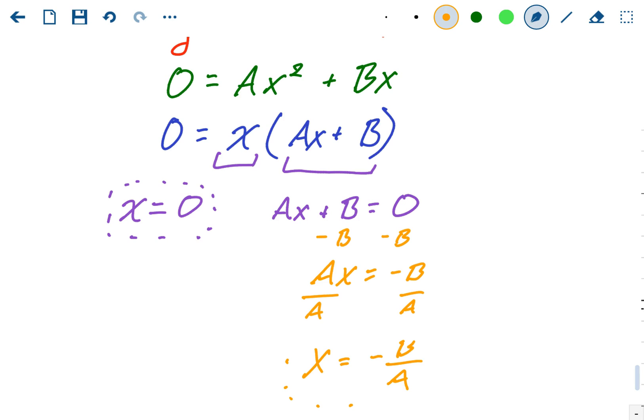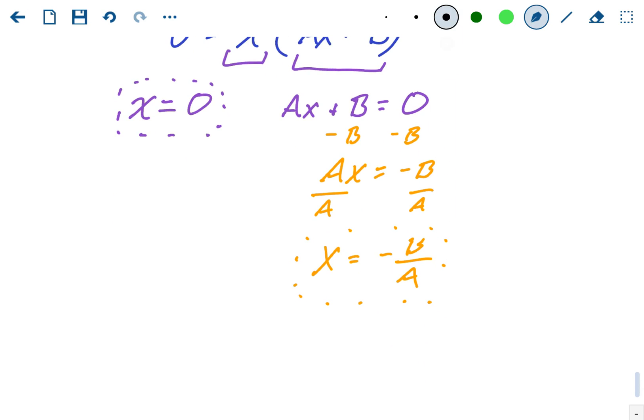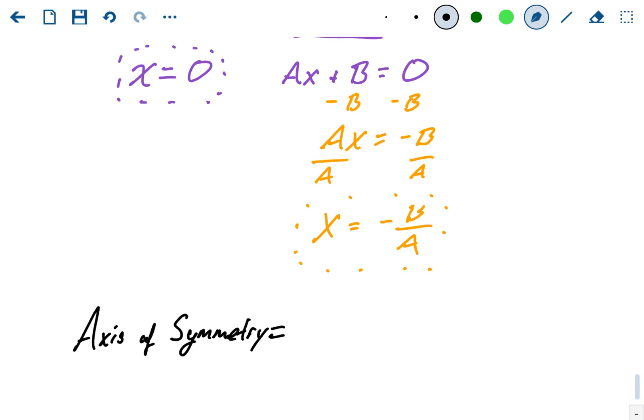Our axis of symmetry has to be halfway between these two points. How do we find halfway between two points? Well, you add them together and you divide by two. So our axis of symmetry is going to be between our two x-intercepts. Our two x-intercepts, we have one at zero and we have one at negative b over a, so we're going to add those together and divide by two. Zero plus negative b over a, divided by two.